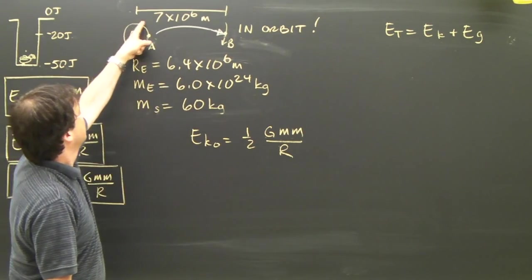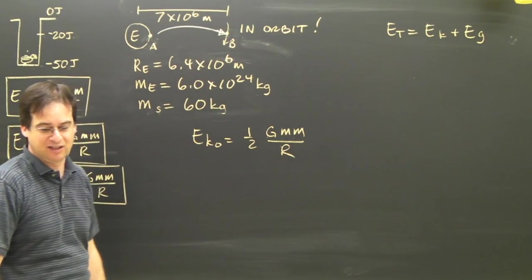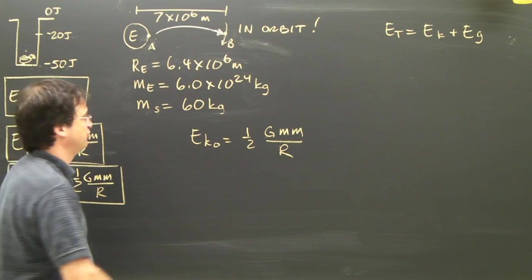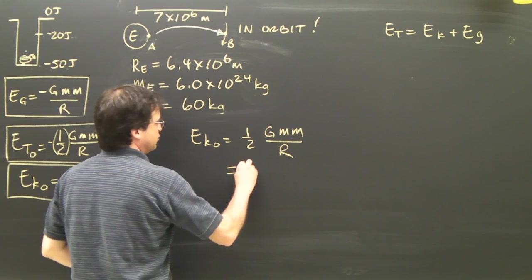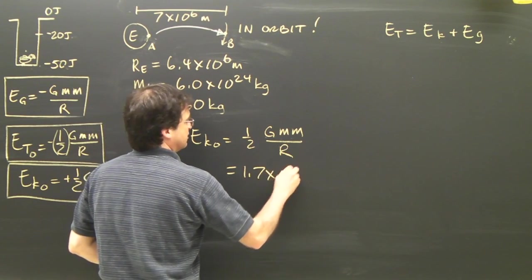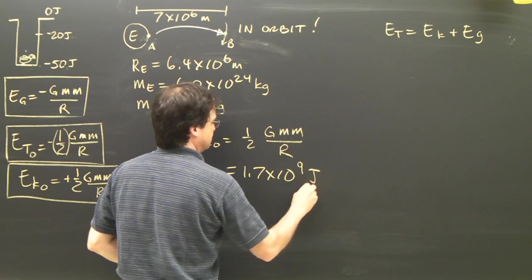And R is 7 times 10 to the 6 meters. If you calculate that, you should find that it's equal to 1.7 times 10 to the 9 joules.